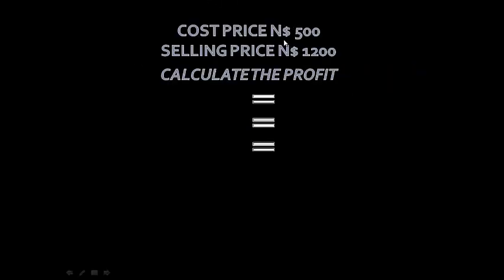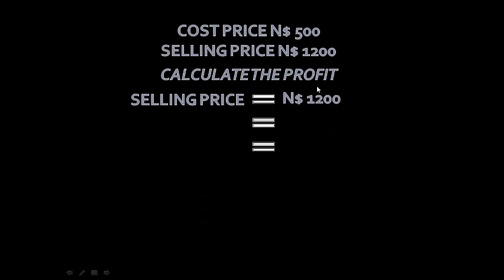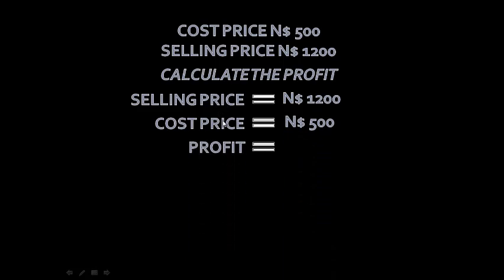Say the cost price of an item is $500 and the selling price of an item is $1,200. Now we need to calculate the total profit. Selling price is $1,200, our cost price is $500. The difference between the two is our profit, so selling price less cost price: $1,200 less $500 gives us $700.